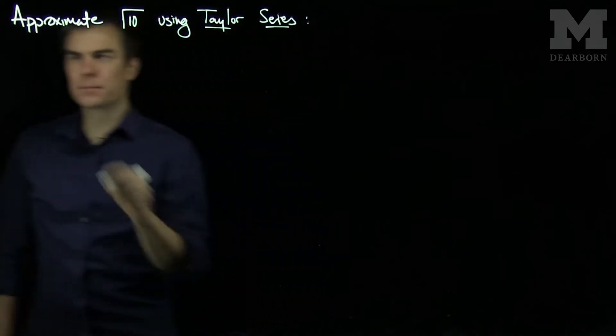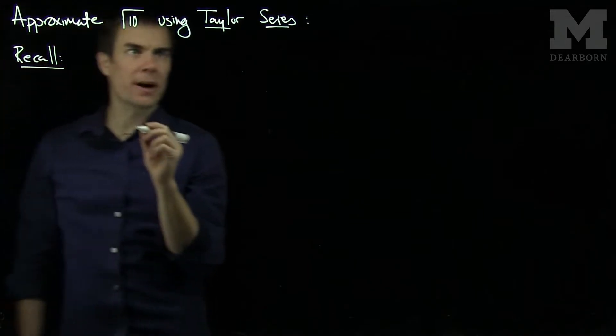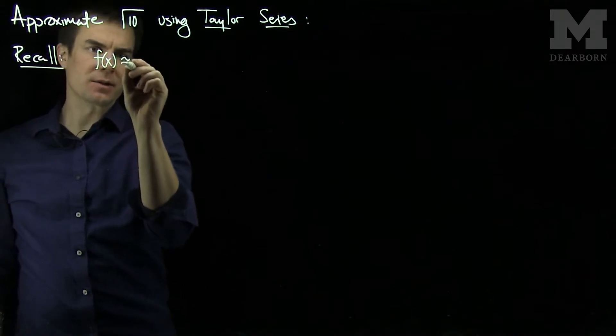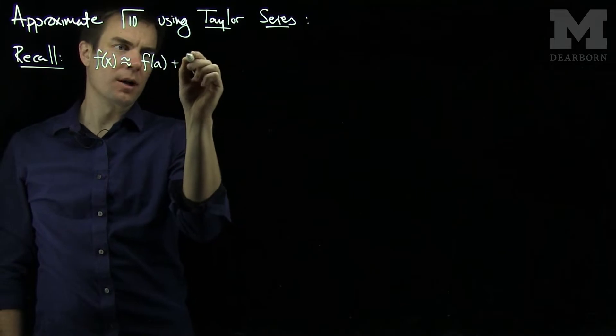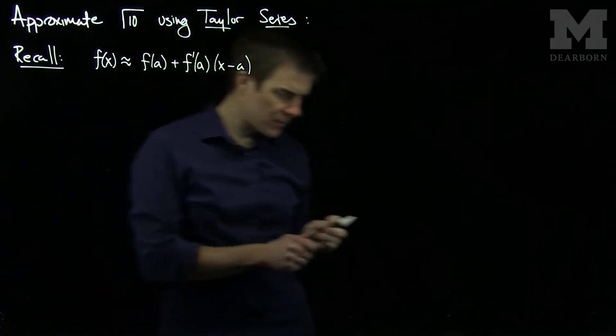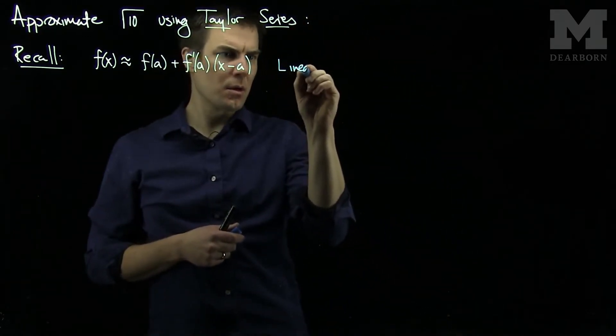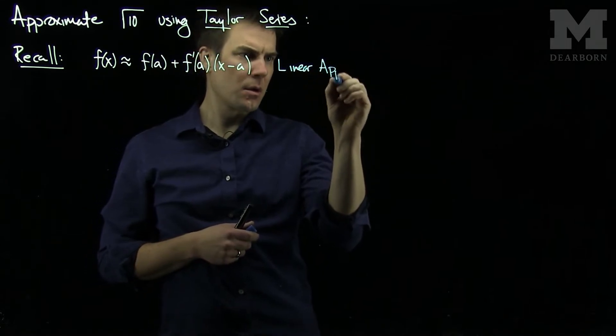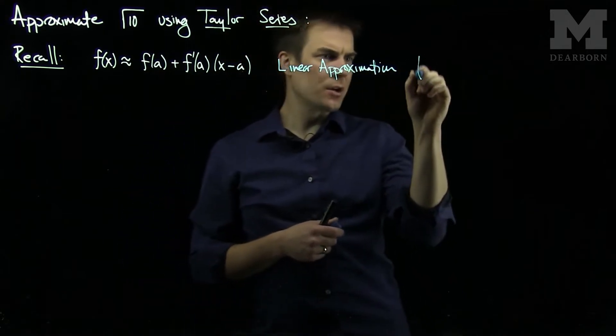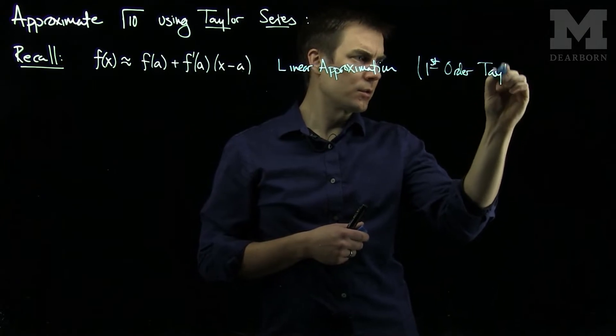What we can recall is we've already done one type of approximation for this in Calc 1. The linear approximation says that f(x) is approximately f(a) plus f'(a) times (x - a). This is the linear approximation formula. This is also the first order Taylor formula, first order Taylor polynomial.